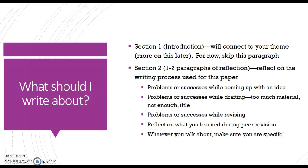The third bullet talks about problems or successes you had while revising. Maybe you thought you had a perfect first draft, or maybe you had trouble with weak verbs — that could be a trouble spot for you. You could also reflect on what you learned during peer revision, or talk about things you would change if given the opportunity to rewrite the paper. There will be an additional handout with a bunch of questions you can answer — you could take any one of those questions and make it its own paragraph and have plenty of information for your learning statement.